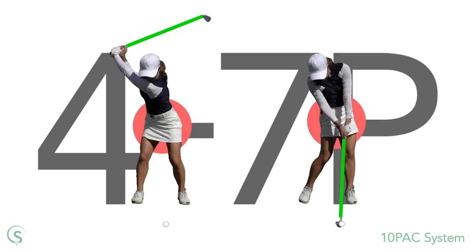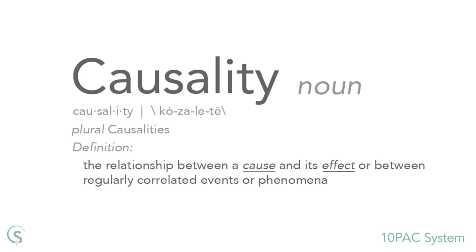So the 10-pack system gives you a simple yet effective method of dividing the swing into manageable parts for analysis. But it's not just a naming tool, a way to catalogue the swing. The 10-pack system can be used to identify problems and solve them. We do this by using the concept of cause and effect, which states that any occurrence is the result of something that happened before it. So there's a reason for an event — it didn't just happen. And the same goes for swing faults.